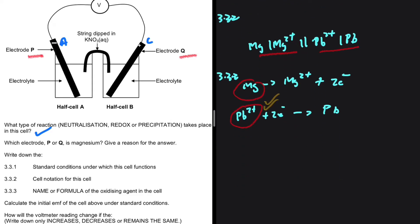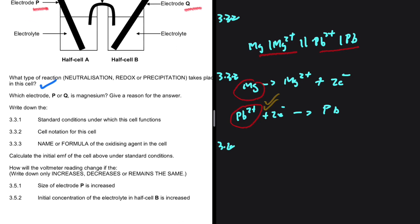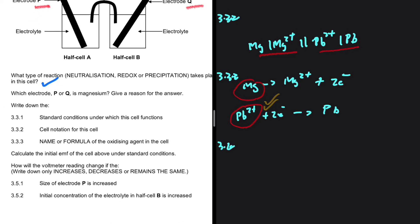The following question, 3.4. We're supposed to calculate the EMF of the cell above under standard conditions. Right. The EMF of the above cell will be equal to the standard reduction potential of the cathode minus the standard reduction potential of the anode.